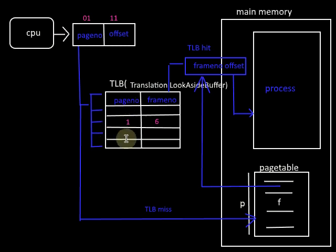As the process goes on, the TLB will fill up and all entries will get filled. Then one entry must be chosen to be replaced, and it is the task of the operating system to select the proper replacement policy for replacing an entry in the TLB.